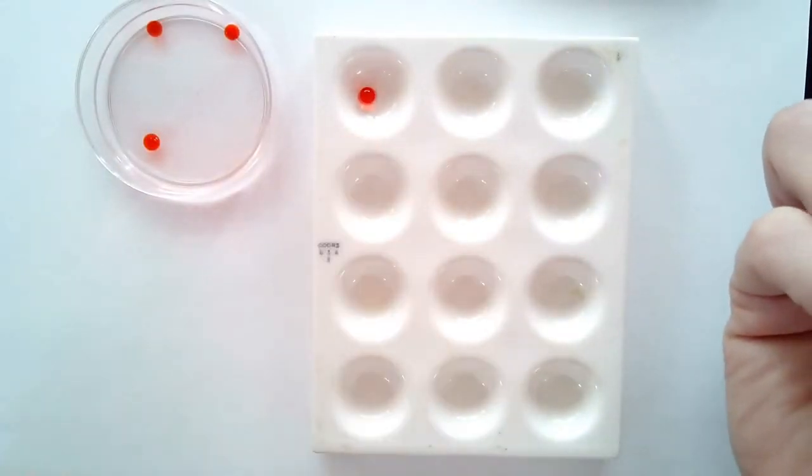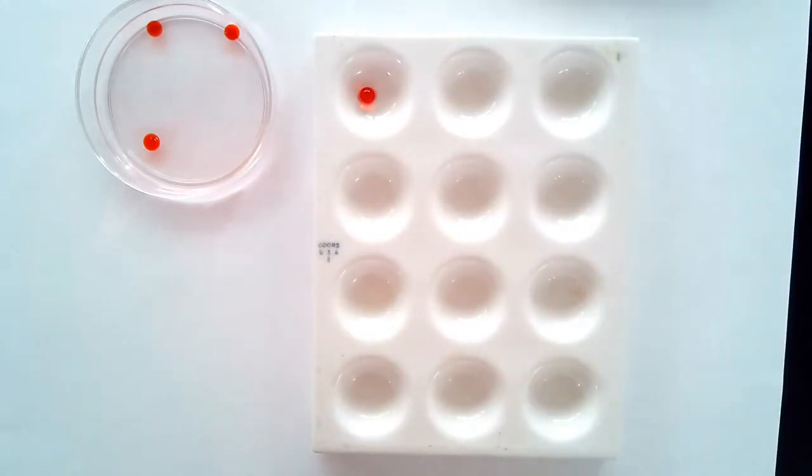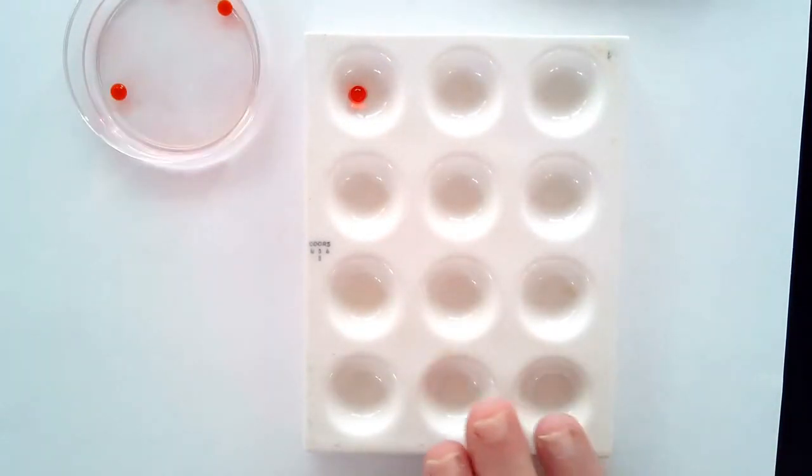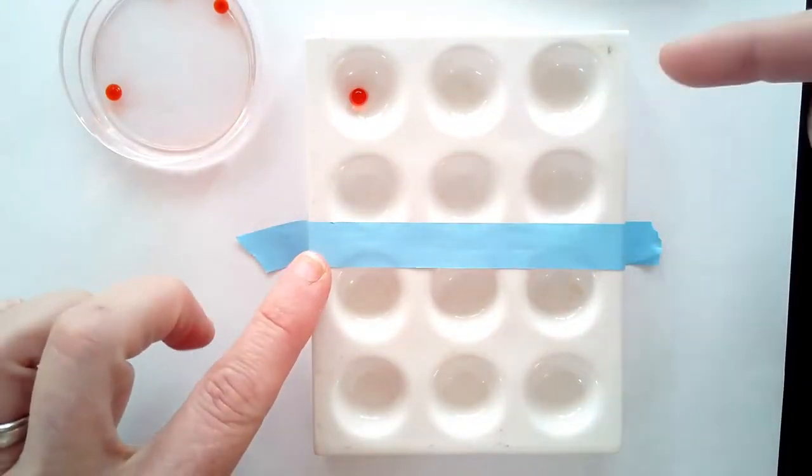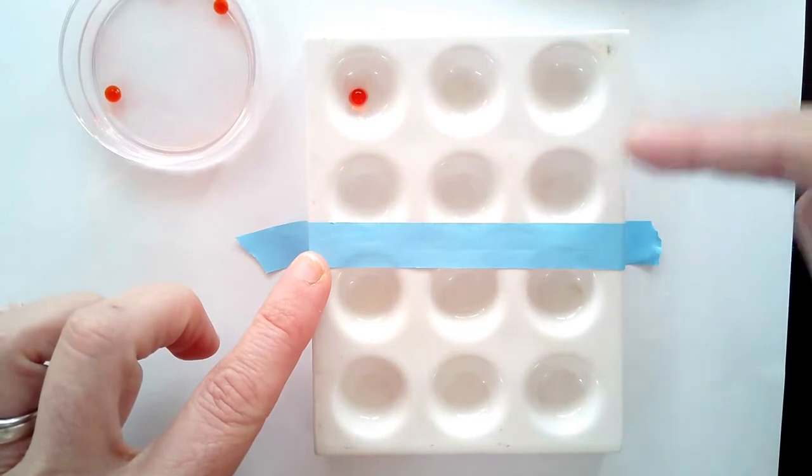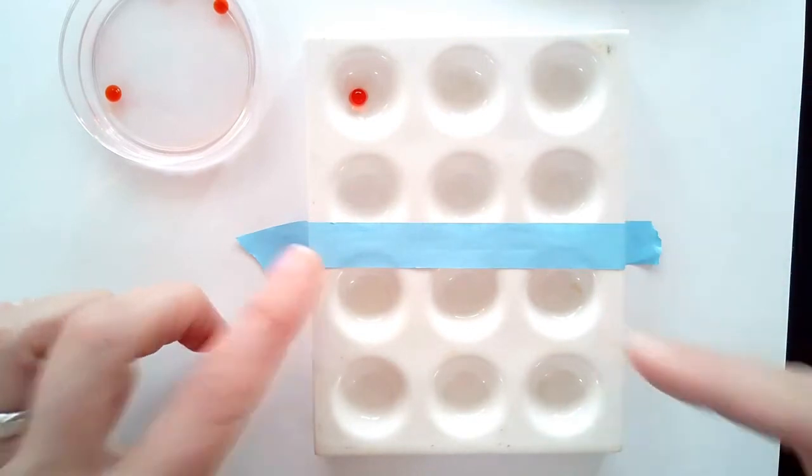It's important for you to set up your spot plate so that you remember what is where. If you have your own spot plate, you can use the entire thing. If you're having to share it with the people across from you, you can split it using a piece of tape. That way you know these are your six wells and these are the six wells belonging to the partners across from you.